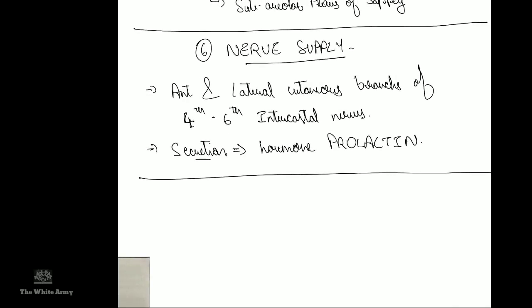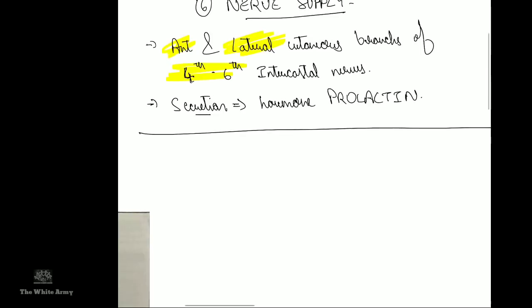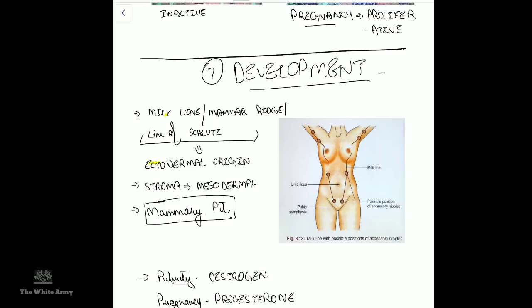The breast is supplied by the anterior and lateral cutaneous branches of the fourth to sixth intercostal nerves, and the secretion of the breast is controlled by hormones.